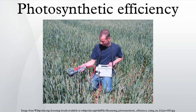Photosynthesis increases linearly with light intensity at low intensity, but at higher intensity this is no longer the case. Above about 10,000 lux or 100 watts per square meter, the rate no longer increases. Thus, most plants can only utilize 10% of full midday sunlight intensity. This dramatically reduces average achieved photosynthetic efficiency in fields compared to peak laboratory results.